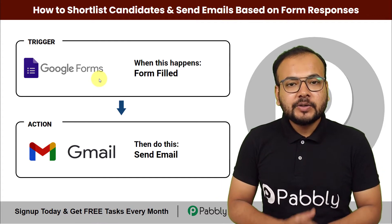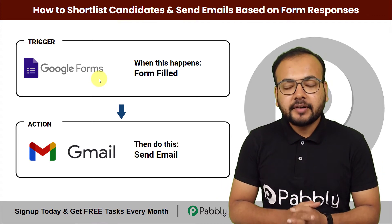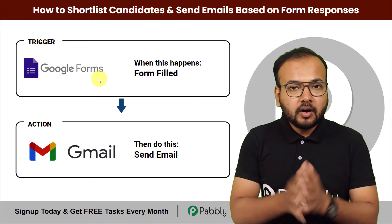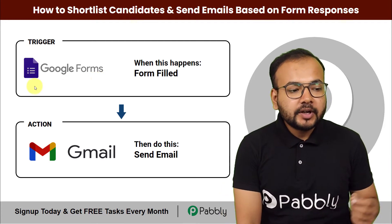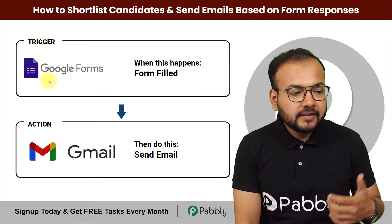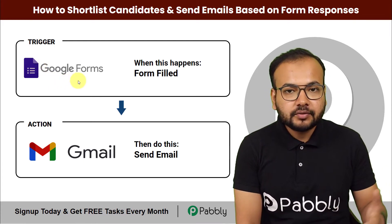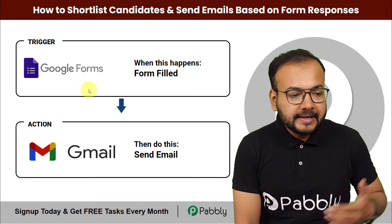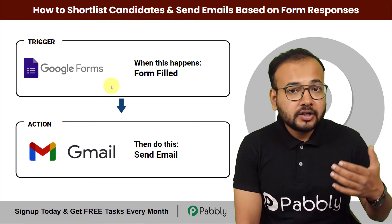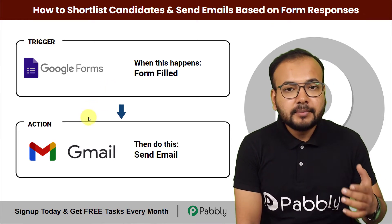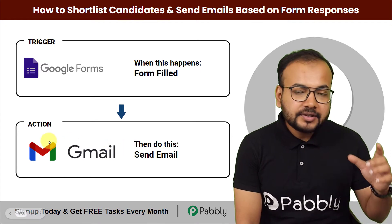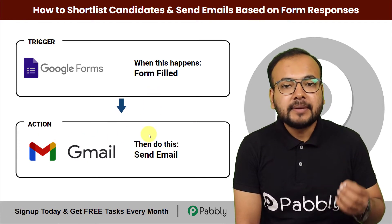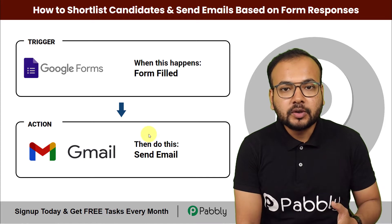In this video you will learn how you can shortlist candidates for recruitment and send emails to them according to their eligibility and qualification automatically. For that, we are going to connect Google Forms as a trigger application to receive job applications from different candidates. According to the eligibility or educational qualification, different emails will be delivered to different candidates, and for sending those emails we are going to connect Gmail as the action application.